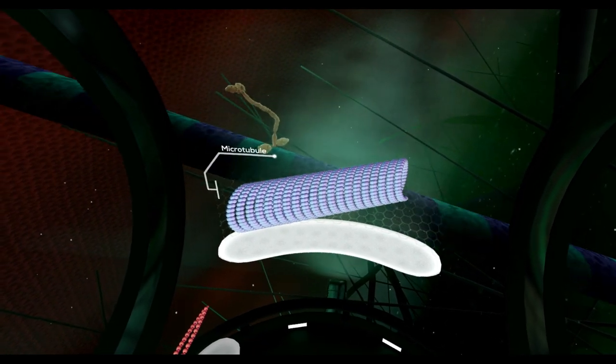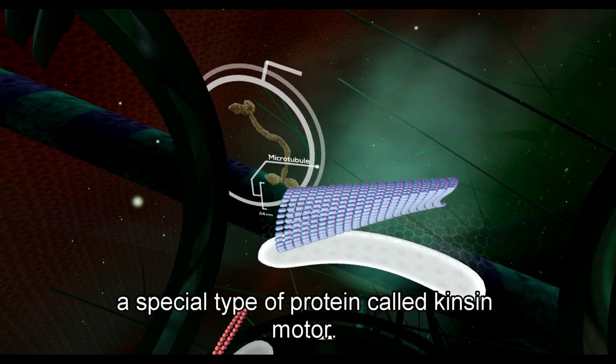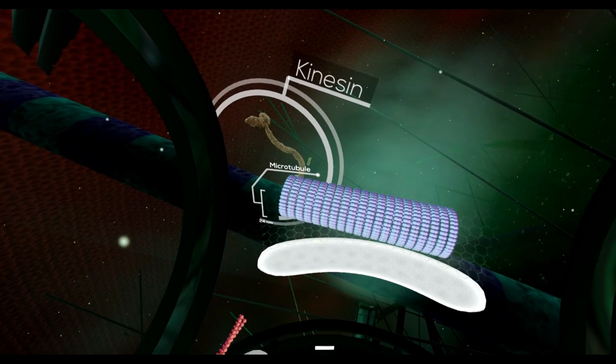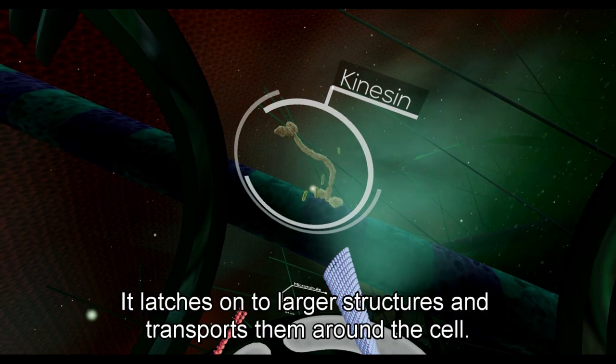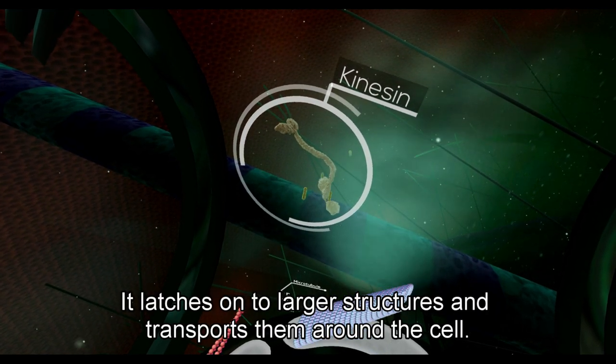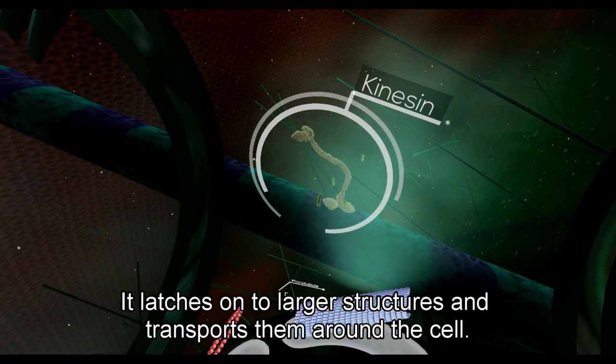Next, microtubules. A special type of protein called kinesin motor protein has the ability to walk along microtubules. It latches onto larger structures and transports them around the cell.